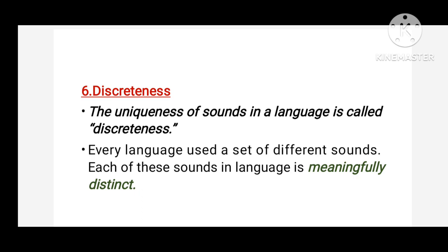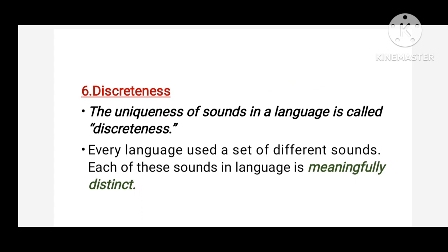When these sounds are combined, they create expressions which are different from one another. For example, we have English words like 'cold' and 'gold' — yahan par just ek sound ka difference hai, lakin yeh difference words ki meaning ko completely change karta hai. So this property of human language is called discreteness.